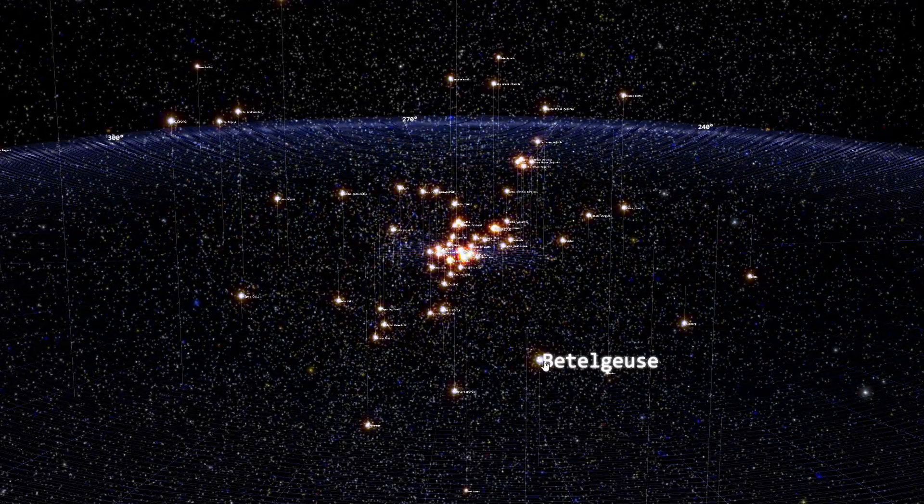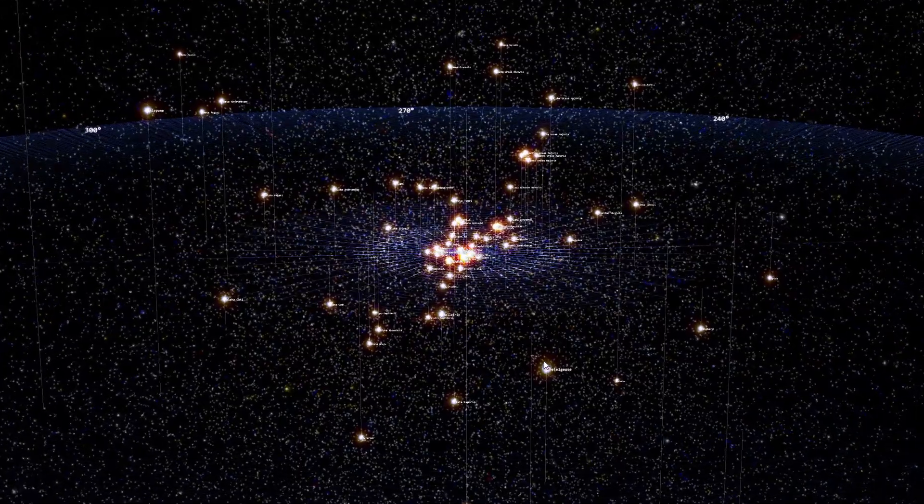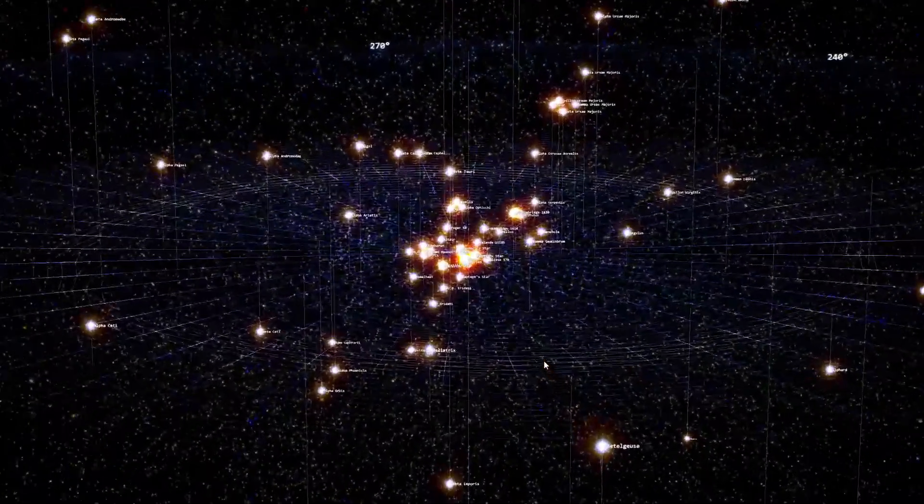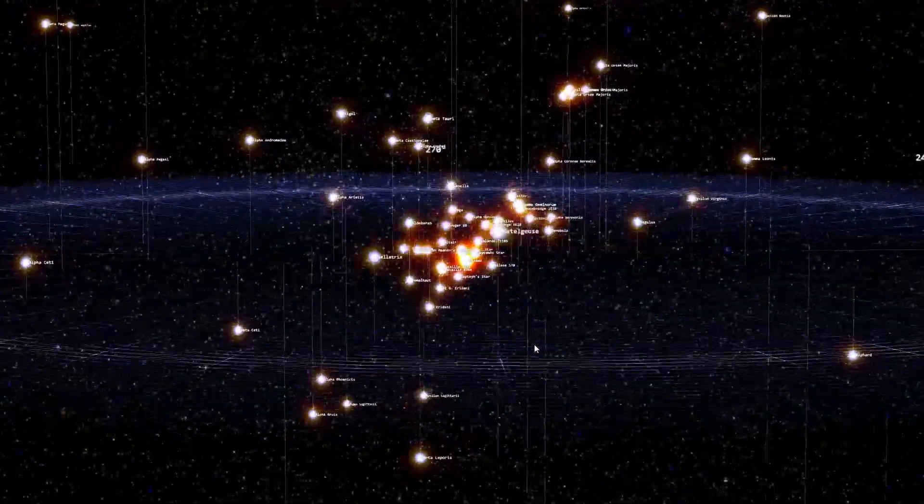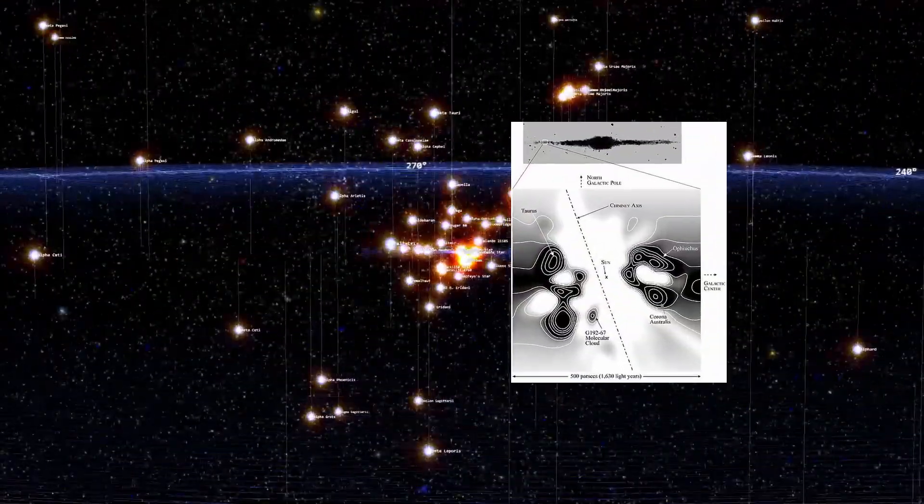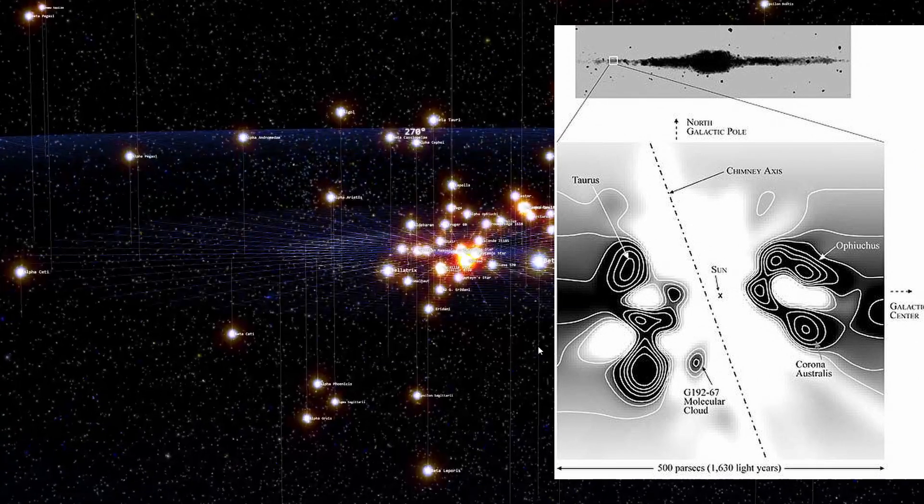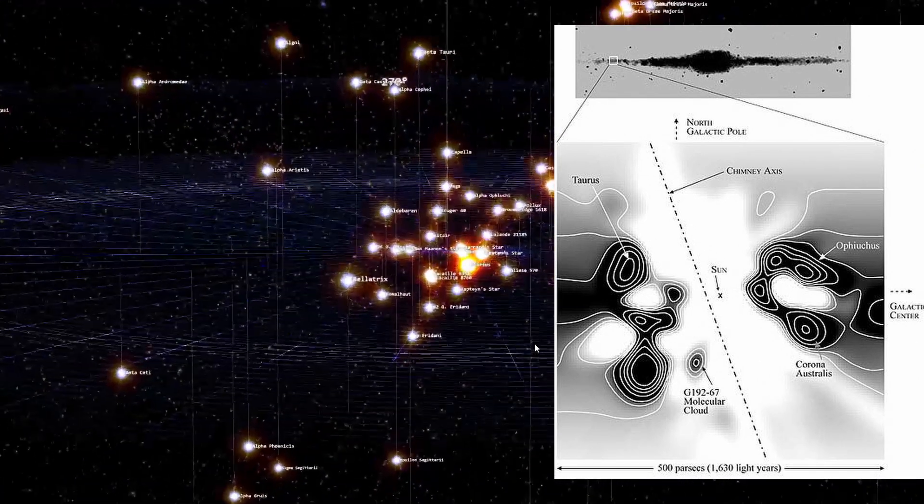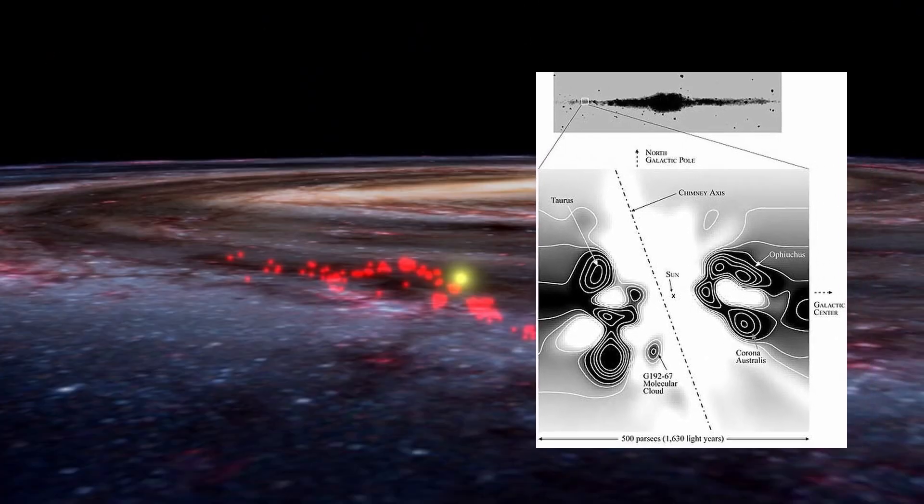It is a local star. And if you have watched the procession series, you will be familiar with a structure called the local chimney. And this is a large structure that we sit on the edge of. And this is possibly part of a large stellar Birkeland current which passes up and down through the galactic plane, weaving up and down.